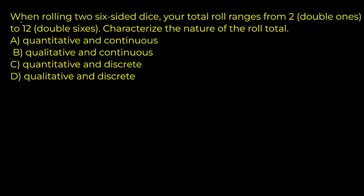Let's look at this problem right here. This question is asking: when rolling two six-sided dice, your total roll ranges from 2 (double ones) to 12 (double sixes). Characterize the nature of the roll total.